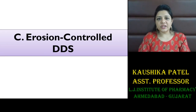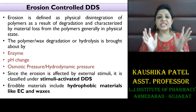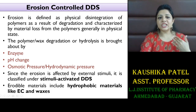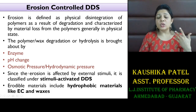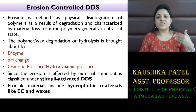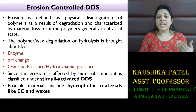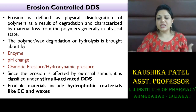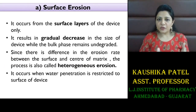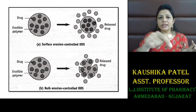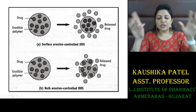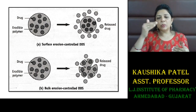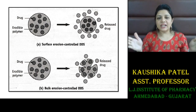The third mechanism is the erosion control drug delivery system. Erosion is the physical disintegration of the polymer, which leads to loss of material. This can occur by enzymatic change, pH change, or osmotic pressure — external stimuli — so it is also known as stimuli-activated drug delivery system. You have to use erodible materials like ethylcellulose and different waxes. Erosion can be surface erosion or bulk erosion. In surface erosion, only the surface layer is eroded first, then gradually, layer by layer, the polymer erodes and the drug is released gradually.